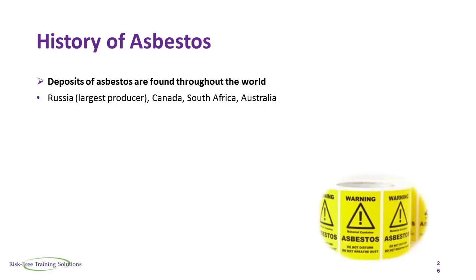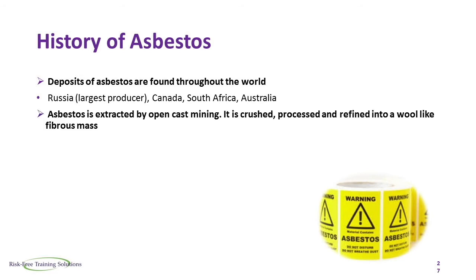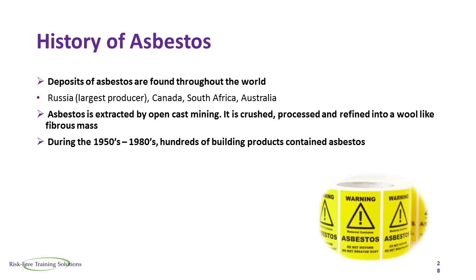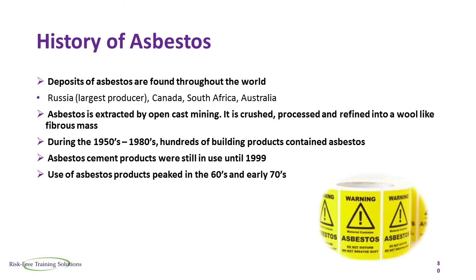Deposits of asbestos are found throughout the world, such as Russia, which is the largest producer, Canada, South Africa and Australia. Asbestos is extracted by opencast mining. It is crushed, processed and refined into a wool-like fibrous mass. Between the 1950s and 1980s, hundreds of building products contained asbestos. Asbestos cement products were still in use until 1999. Use of asbestos products peaked in the 60s and early 70s.